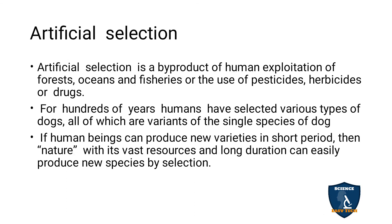Natural selection is a byproduct of human exploitation — exploitation of forests, oceans, and fisheries — and through the use of pesticides, herbicides, and drugs. In just a few hundred years, humans have selectively bred dogs, producing many variants, yet the dog remains a single species.